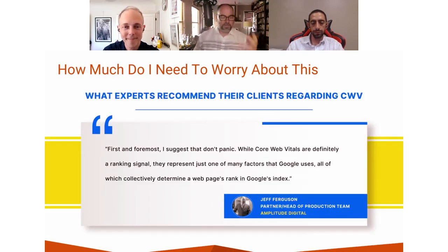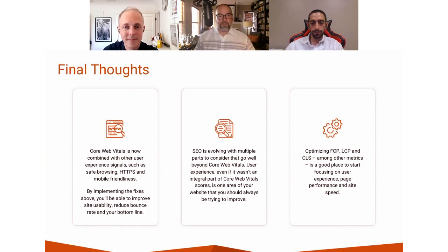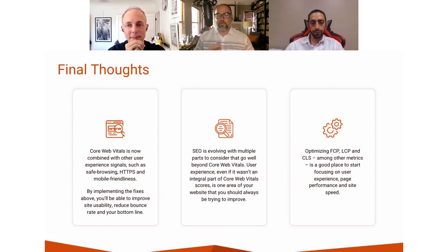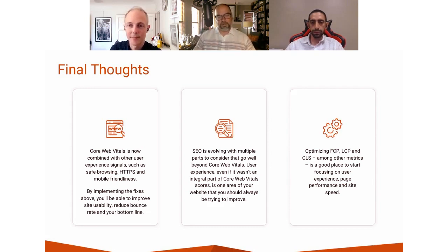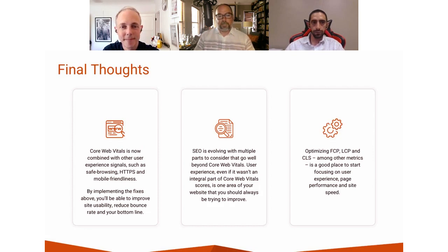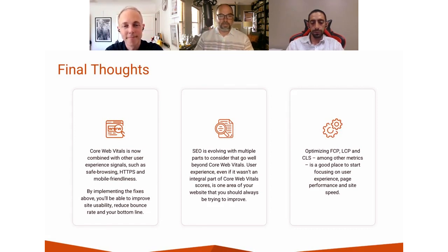So the answer to 'what's the most important thing?' is: it's all the things. I know that can be overwhelming, but the best approach is to hit the lowest hanging fruit first. Don't ignore things because you don't have the resources — there are ways to solve those things. Core web vitals are now combined with other user experience signals such as safe browsing, security, and mobile friendliness. If you implement these things right now, you're going to help things across the board — not just your organic search. You'll get love from all directions, including from your users, which is the big one. SEO is one of those evolving things with multiple parts. User experience is one of those things you should always be trying to improve anyway.